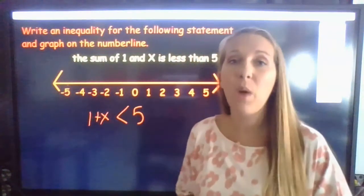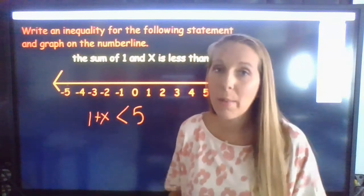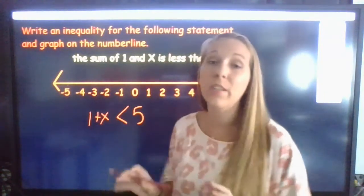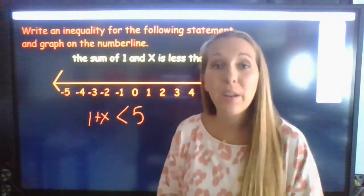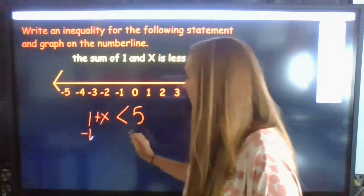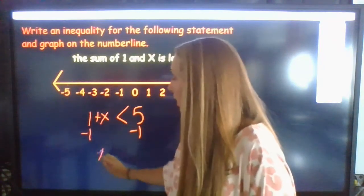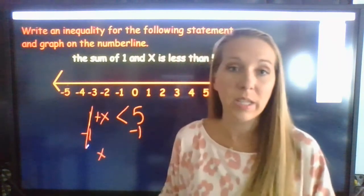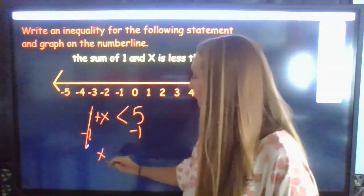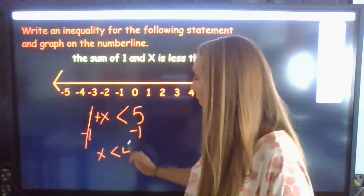Now if you notice, our inequality cannot be left this way because our variable is not isolated. So what we're going to do is solve it just like an equation and do inverse operations to isolate that variable. So minus 1 on both sides. This one will cancel out because 1 minus 1 is 0, and in addition, that gives us our identity of x. Then we have x is less than 4.